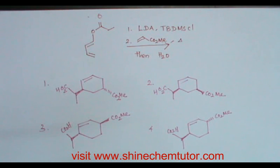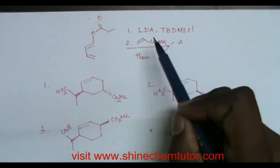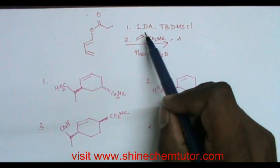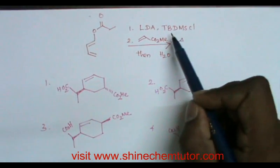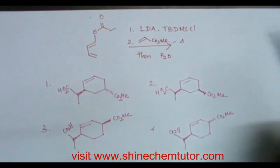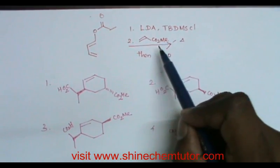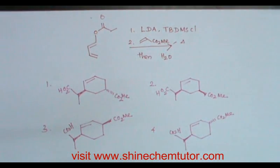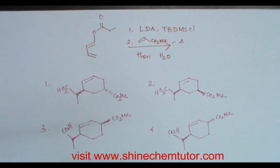In this video, we are going to solve an interesting problem on Diels-Alder reaction and 3,3-sigmatropic rearrangement. The question is: when this diene is treated with LDA (lithium diisopropyl amide), TBDMS chloride (tert-butyl dimethylsilyl chloride), followed by treatment with methyl acrylate upon heating, what will be the product? This problem is based on two interesting reactions.